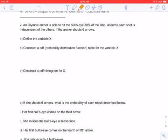Now we know that the probability of hitting the bullseye is 80%, and we are dealing with six arrows. Now the first question we have to deal with here is, what is X? And X is going to be the number of bullseyes hit. That's what we're dealing with here.